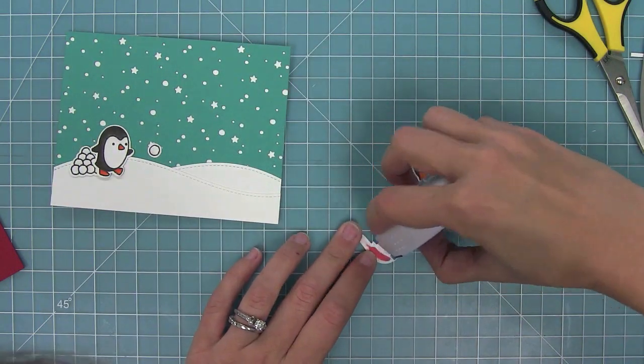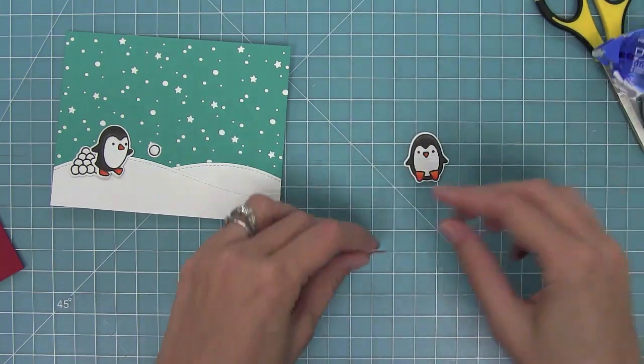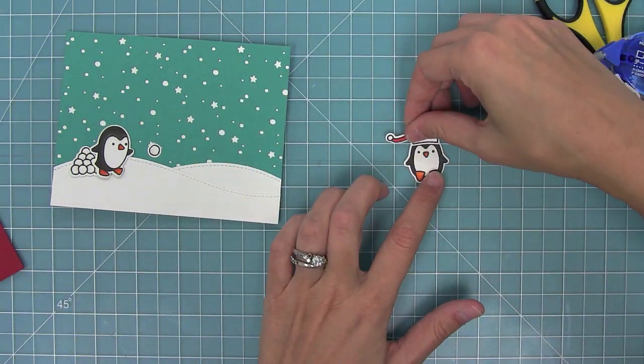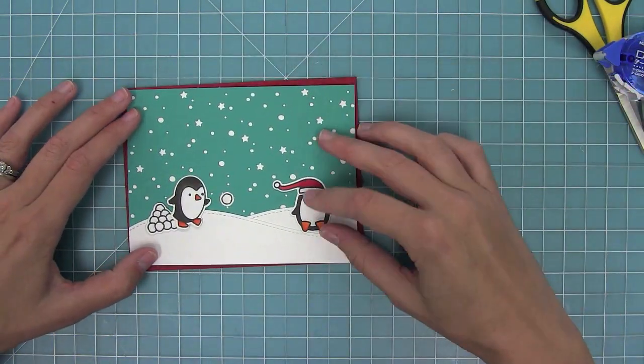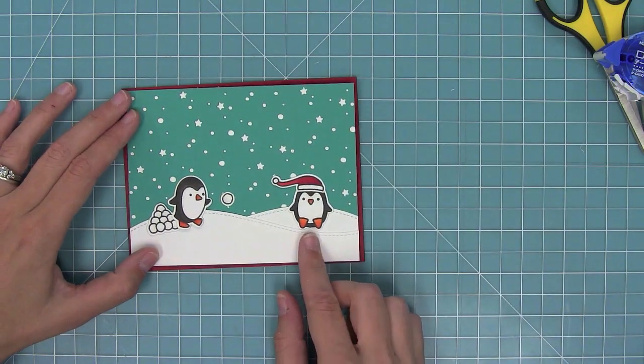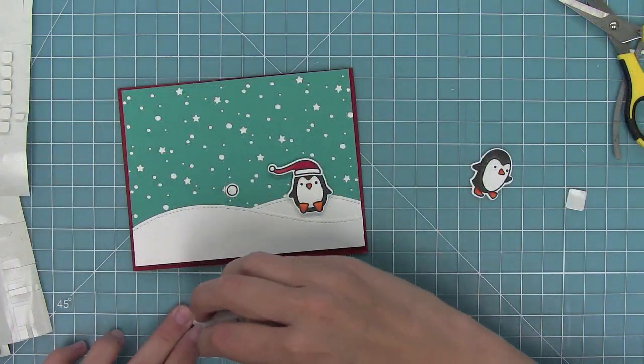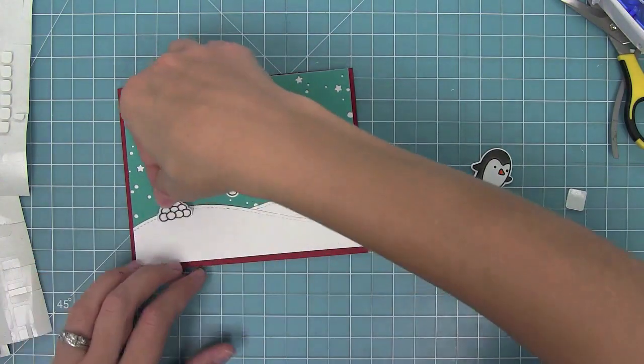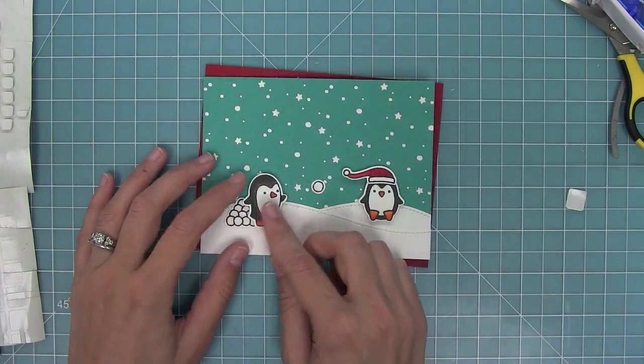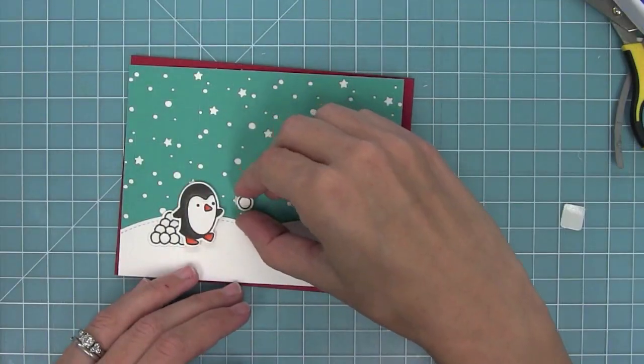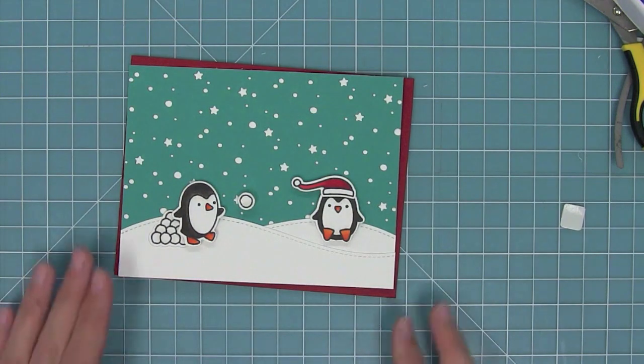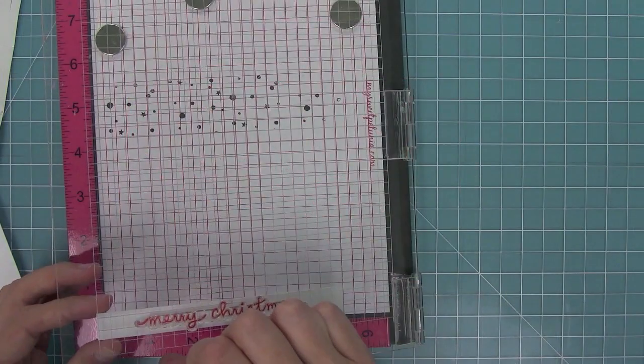I thought it would be fun to have one penguin throwing a snowball at the other one. I'm going to layer that little Santa hat on top which will go with our little red border that's going to go around this card. I can put his little snowball mountain down and then use some foam adhesive to put down the two penguins and a double foam for the little snowball so it really looks like it's flying.